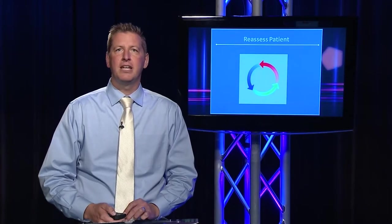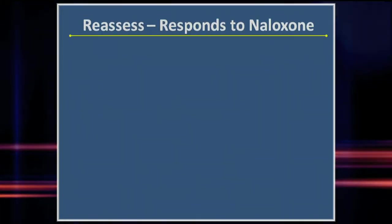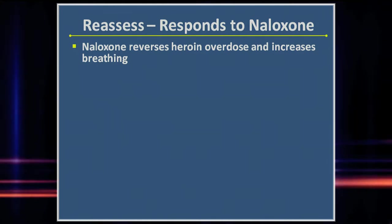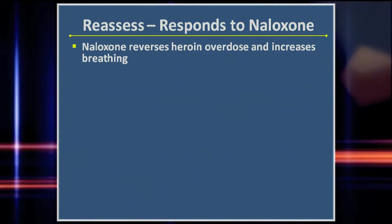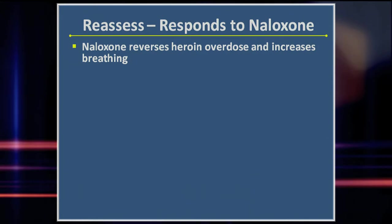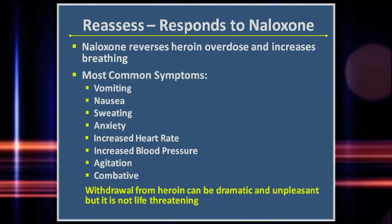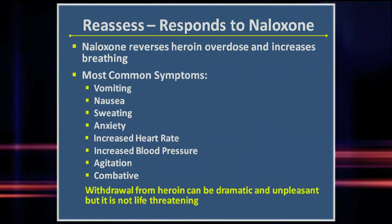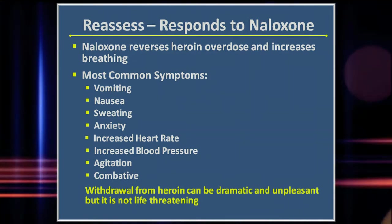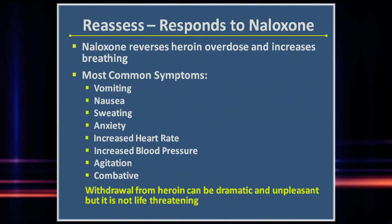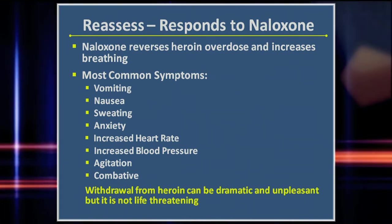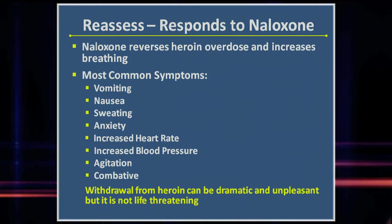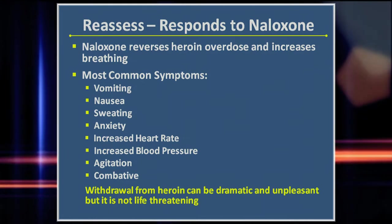After administration, there will be either a response or no response. If the patient was suffering from an opiate overdose, naloxone will quickly produce a dramatic effect. The patient will become arousable and increase breathing in a matter of minutes. They are also likely to show signs of opiate withdrawal, commonly including vomiting, nausea, sweating, anxiety, increased heart rate and blood pressure, and agitation. Withdrawal from opioids can be dramatic and unpleasant, but it's not life-threatening. It's imperative that these patients are evaluated by EMS even if they are now awake and alert. The effects of naloxone wear off faster than some opiates, and patients are at risk for returning to their overdose state without further assistance.